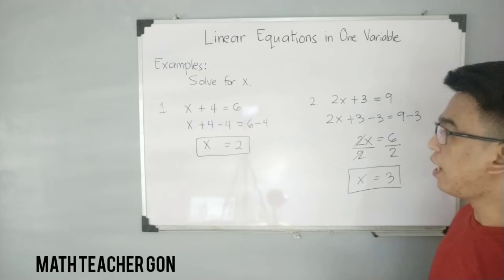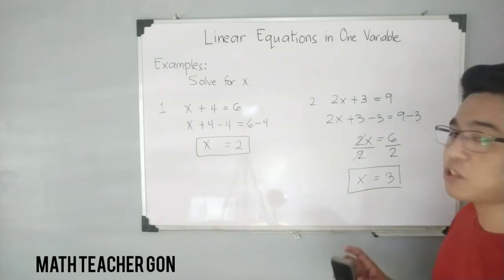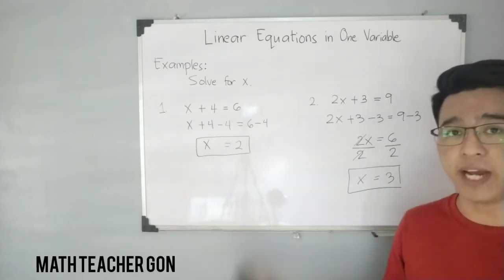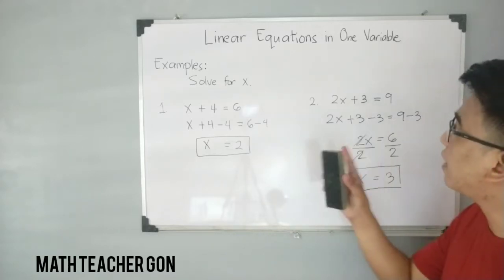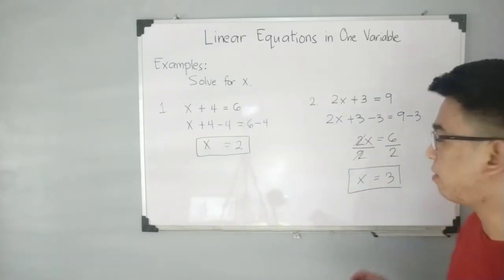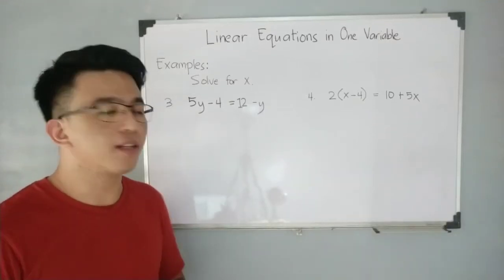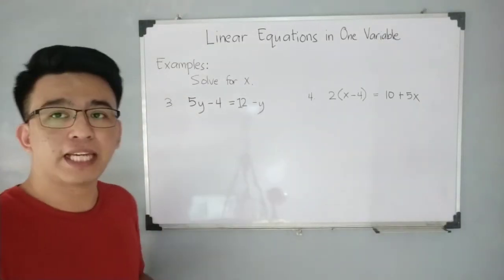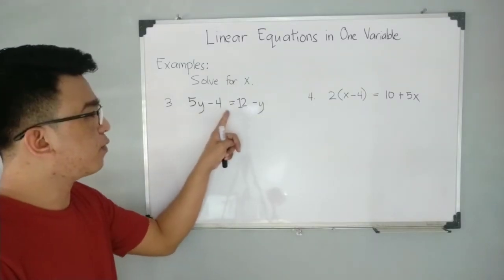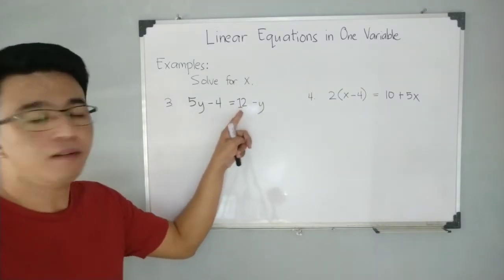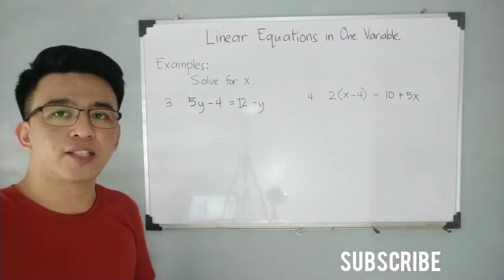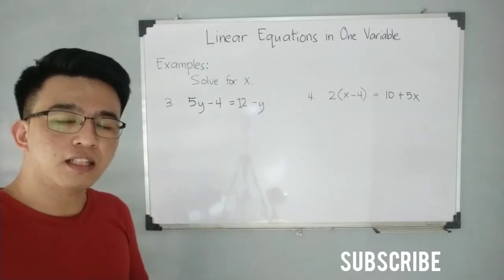I hope after the first two examples you already know how to find the value of the variable in a given linear equation in one variable. Now for item number three, we have a more complex example: 5y minus 4 is equal to 12 minus y.